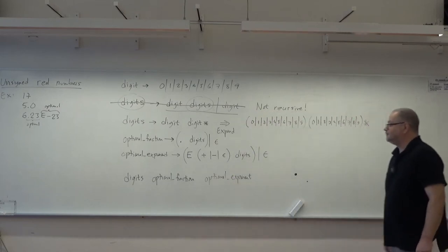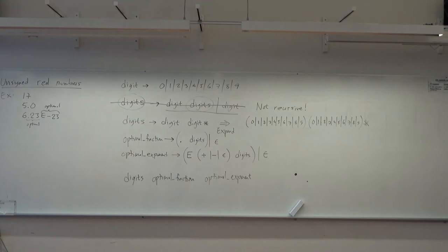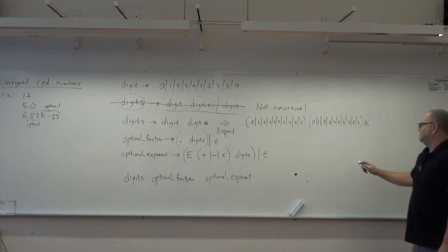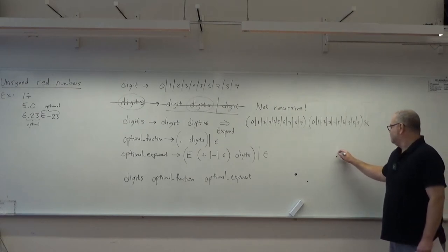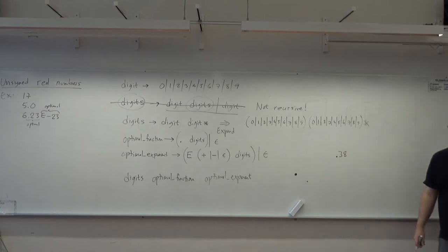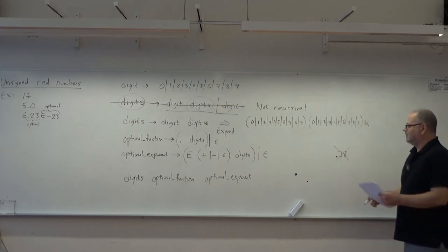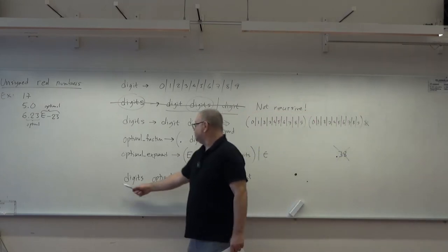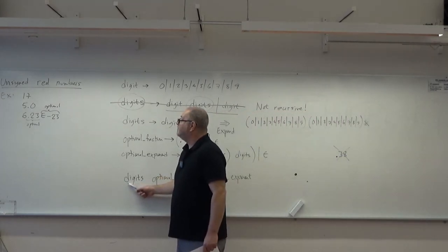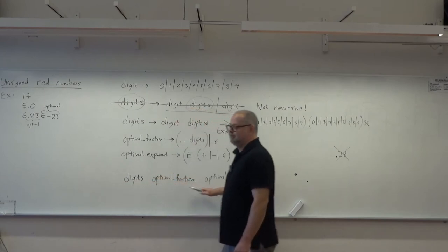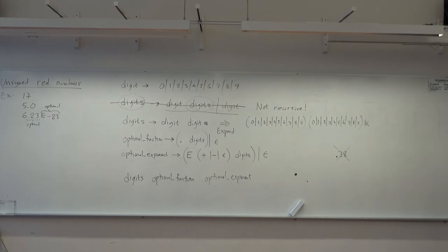Notice that this does not allow the American style of writing decimal numbers without a leading zero. We could make digits optional too, but then if all three parts are optional, you'd allow completely empty unsigned real numbers — and we don't want that.